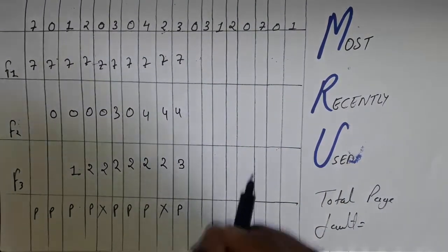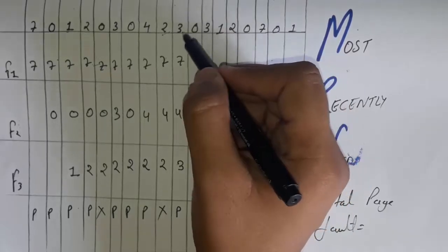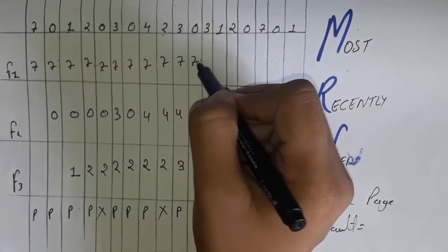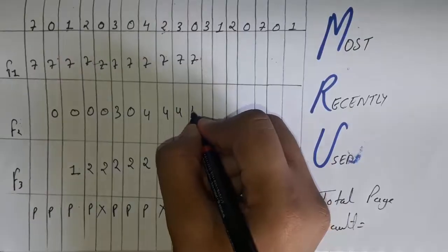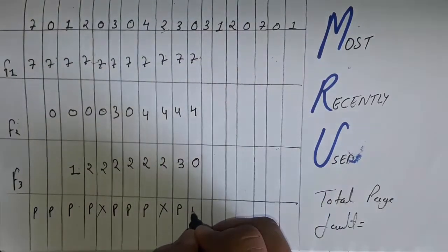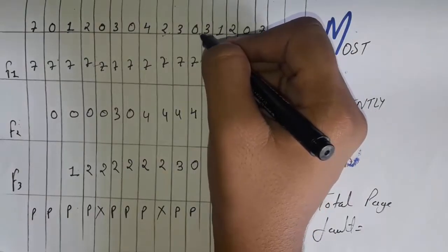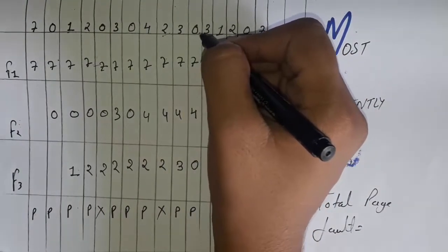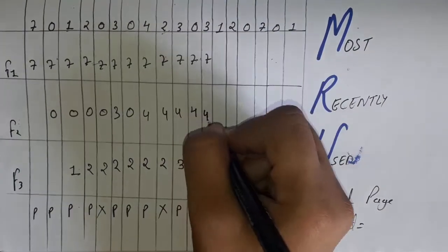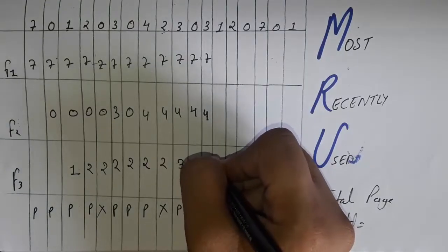Now page 0 arrives. Remove 3 because this is the Most Recently Used. Write 7, 4, 0. Then process 3 arrives again — remove 0 because it is now our Most Recently Used page. Write 7, 4, 3.